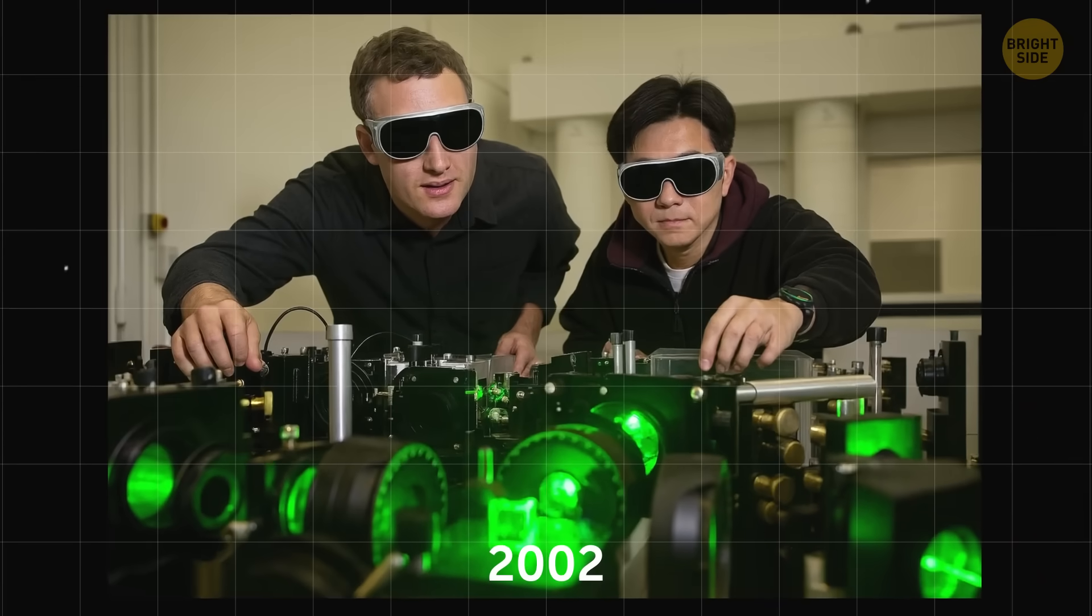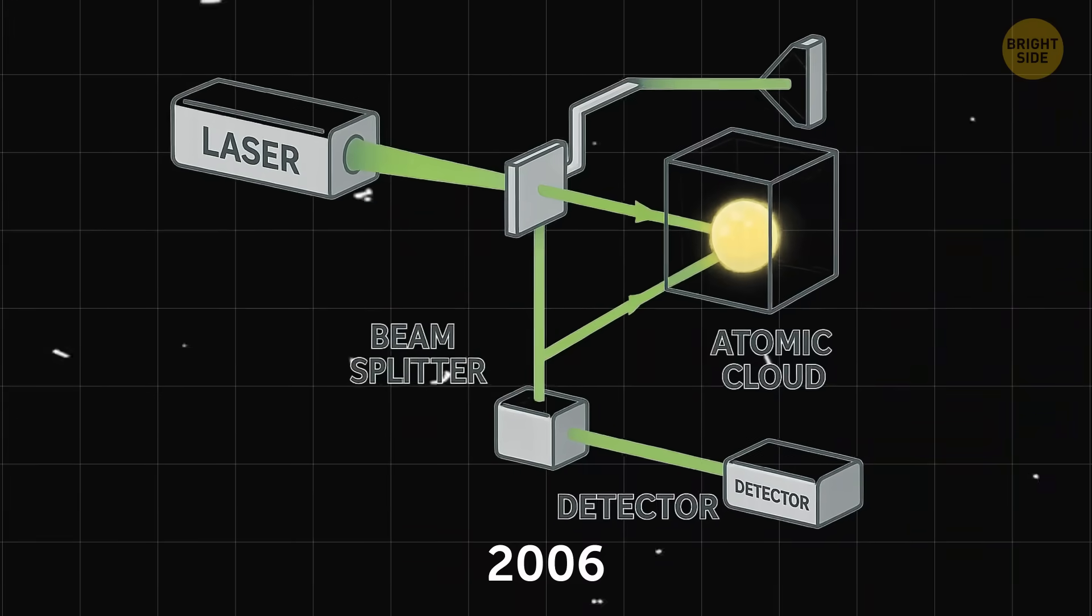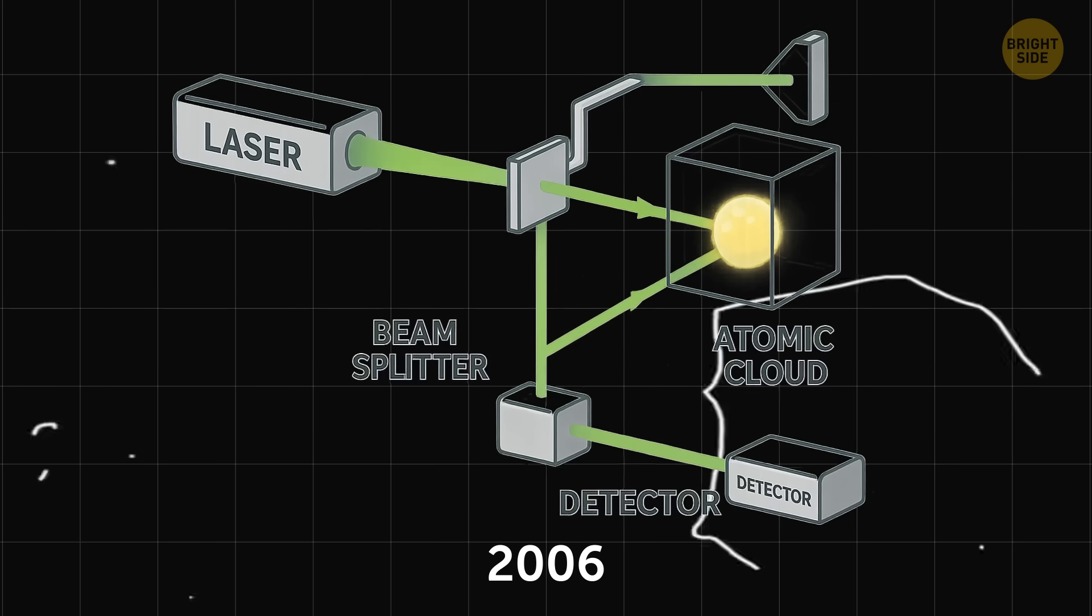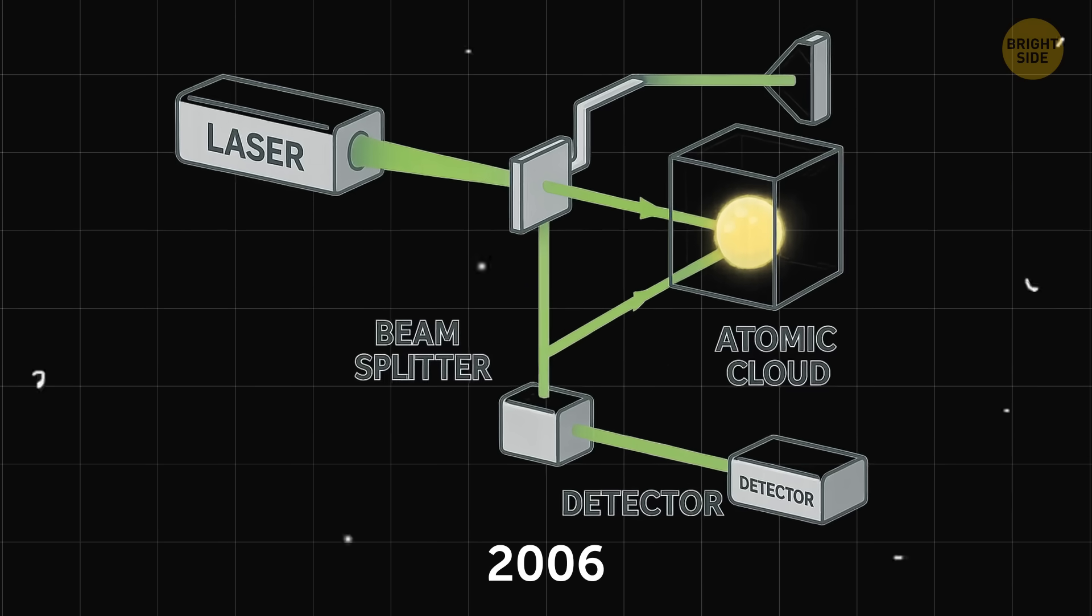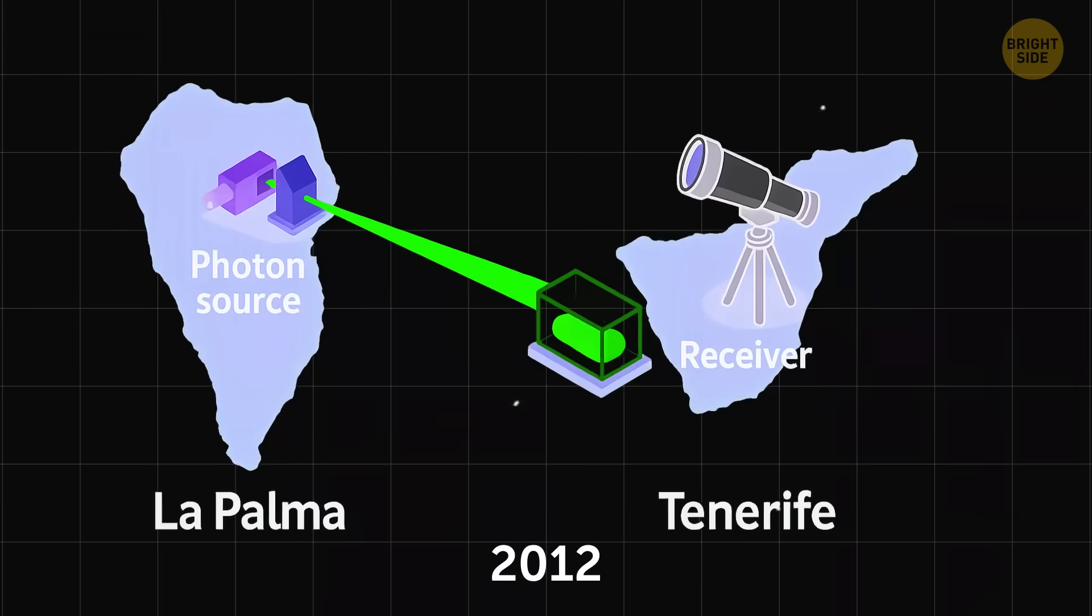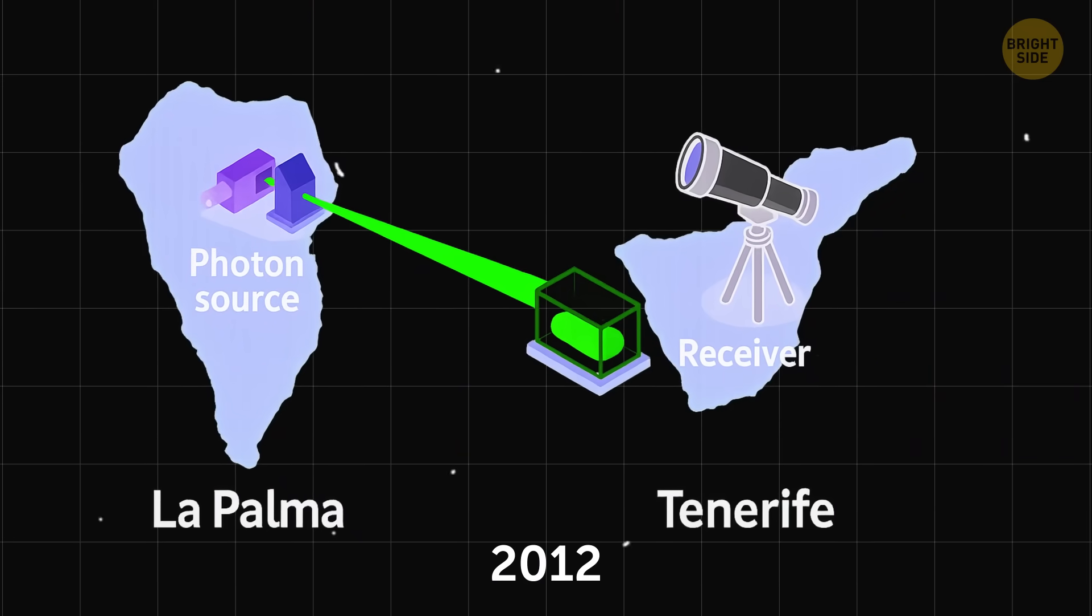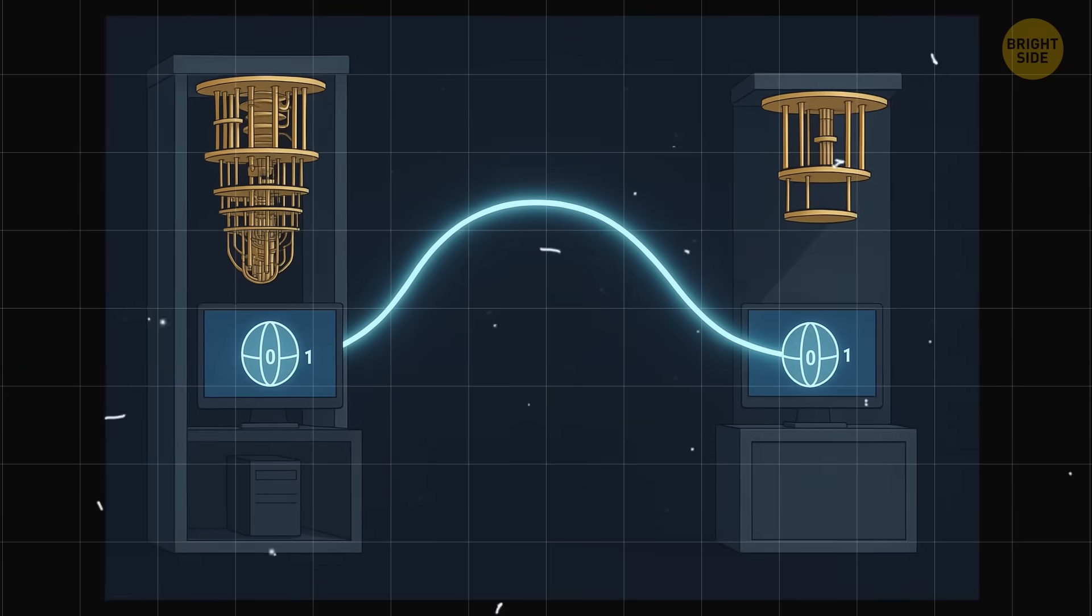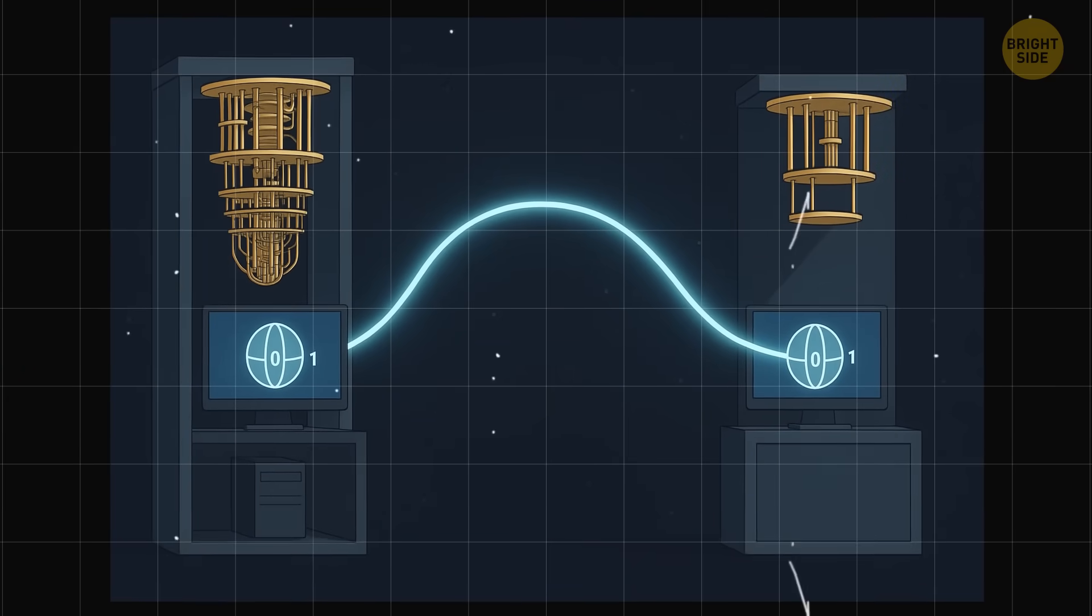In 2002, scientists managed to teleport a laser beam this way. In 2006, they teleported information from a laser into a cloud of atoms. Don't ask, it already sounds very difficult. In 2012, they teleported a photon from one end of the city to the other. And now, scientists have been able to teleport the quantum state of a qubit between two computers.